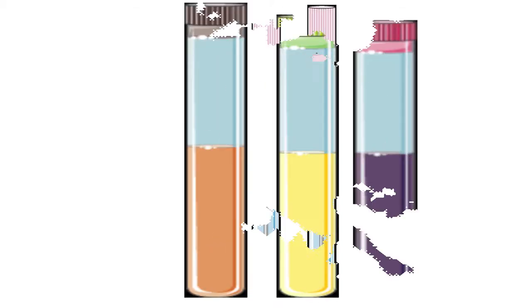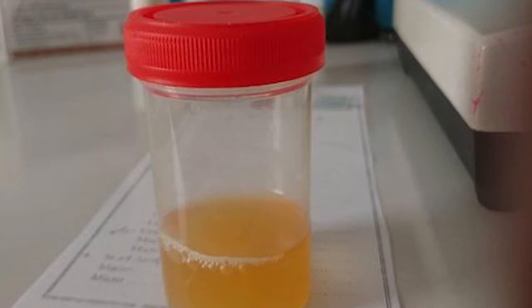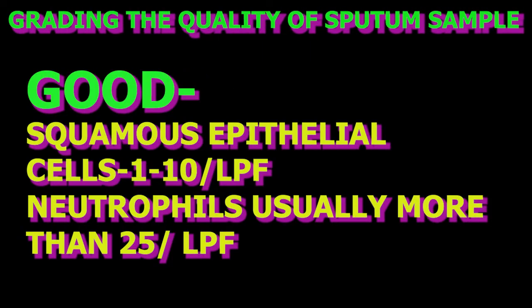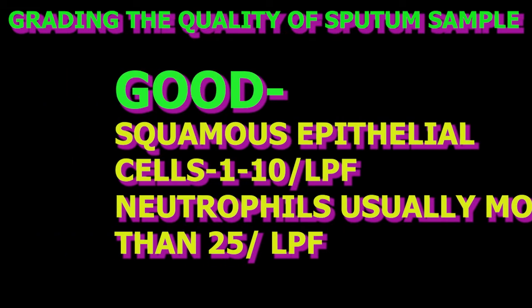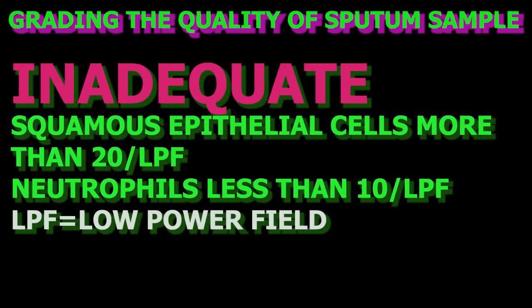Some samples are rich in bacterial nutrients, making commensal cells grow faster than the pathogens. Delay in sample processing makes it more difficult to identify pathogens. Direct smear from the sample makes it easy to determine the type of bacteria present or absent, to select the appropriate media for isolation — such as urine samples — and also to grade the quality of sample collection, for example sputum samples.